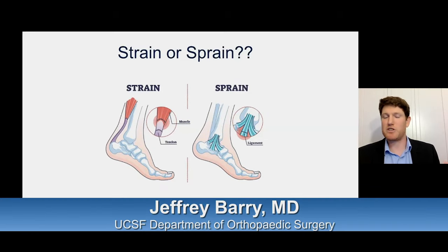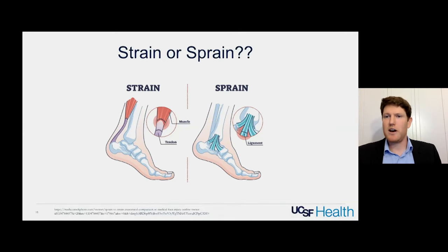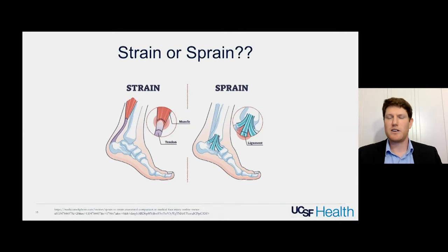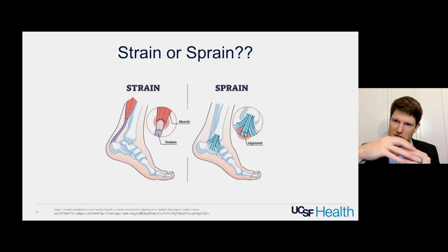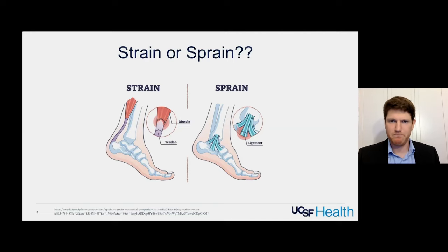The most common ligament sprain would be around your ankle. Dr. Chen will cover that in a couple of weeks. Strains are more muscle injuries or musculotendinous injuries, where the muscle is attaching or turning into a tendon.